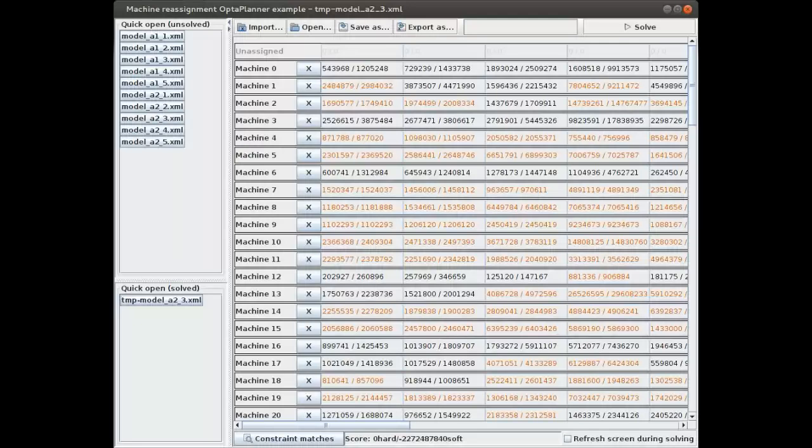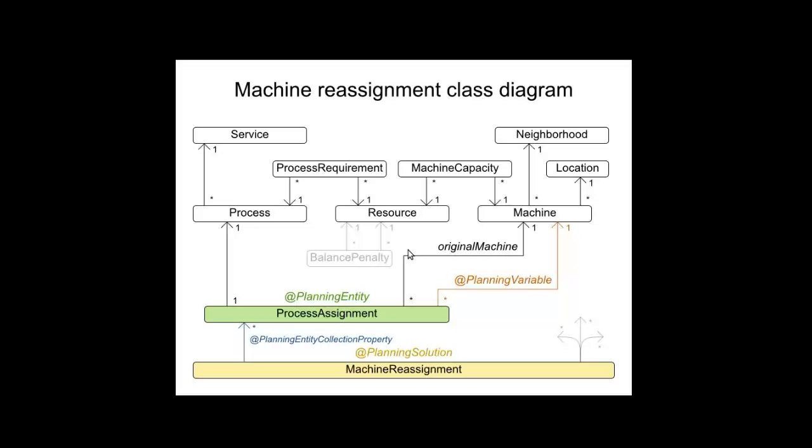Let's take a look at the domain model again. There's another hard constraint. All the processes, each process belongs to a service. For example, the service is the calendar service and it has multiple processes. The reason it has multiple processes running the same service is because if one of those processes goes down, the other processes will fail over for this process. Now the thing is, if two processes of the same service would be running on the same machine and the machine goes down, there won't be much failover because both processes will go down. So there's a hard constraint which says that if two processes belong to the same service, they should be running on different machines.